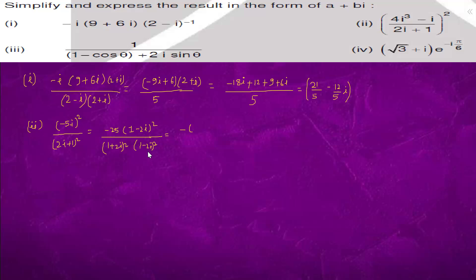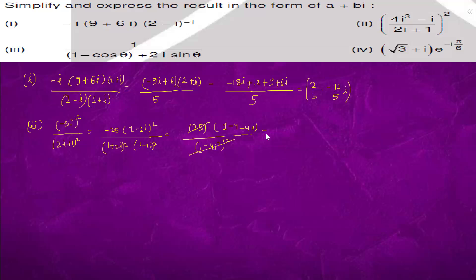We get 1 minus 4 iota squared whole square, which is 2, and here we have 25. And here we have 1 plus 2 iota whole square, which gives minus 4 minus 4 iota. These terms cancel, leaving 4 iota plus 3. Question 3: 1 minus cos theta equals 2 sine squared theta by 2.